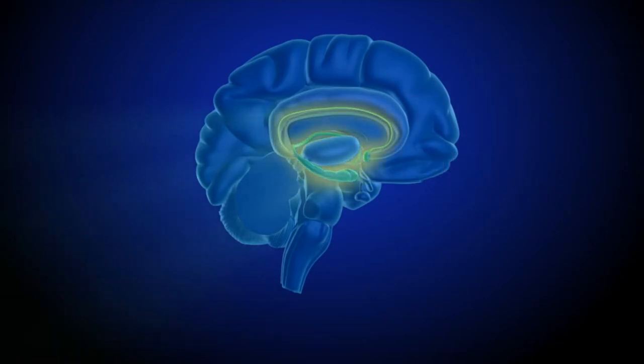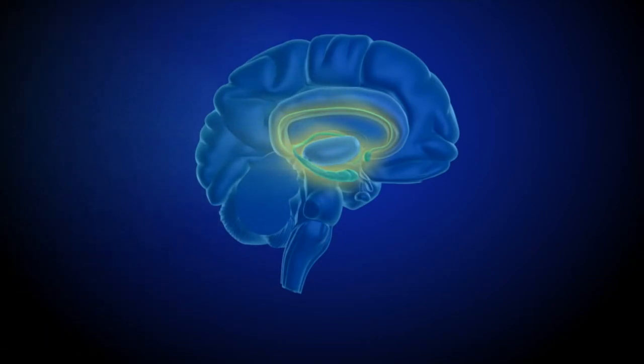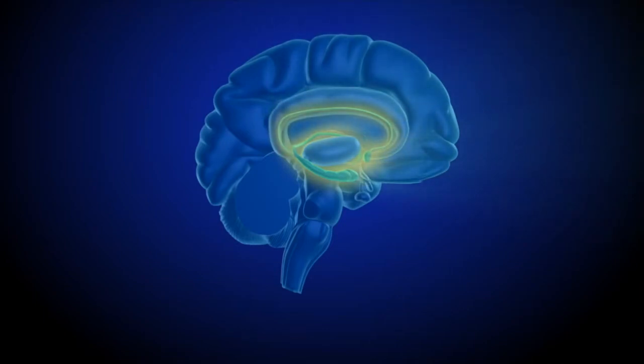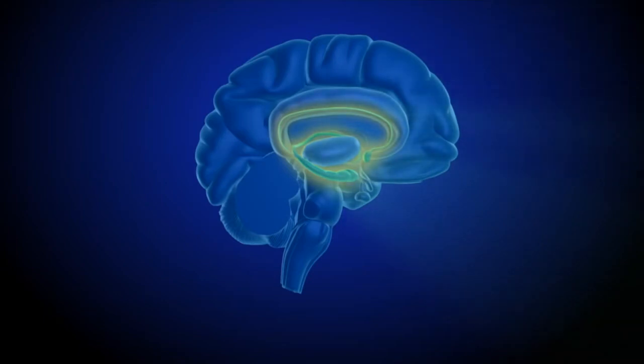The limbic system contains the brain's reward circuit or pathway. The reward circuit links together a number of brain structures that control and regulate our ability to feel pleasure. Feeling pleasure motivates us to repeat behaviors, such as eating, and other actions that are critical to our existence.